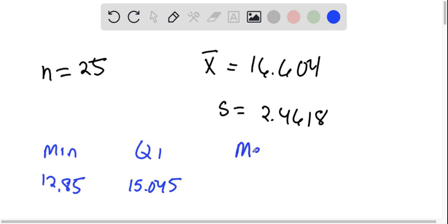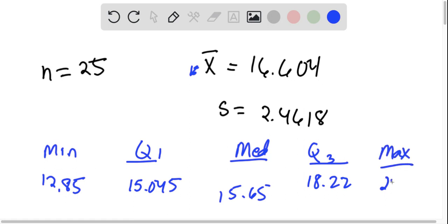The median, and this will help us with some symmetry, is 15.65. So we can see we have a little bit of skewing because this mean and this median are one mile per gallon off. Q3 is 18.22, and the maximum is 22.11.